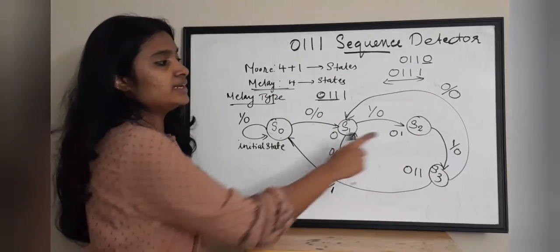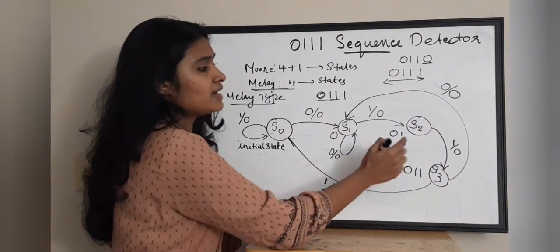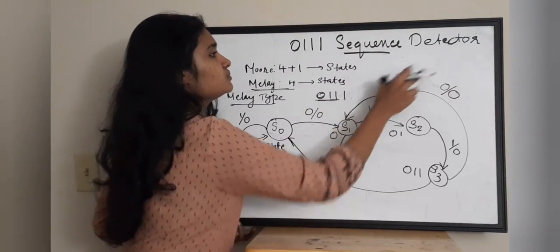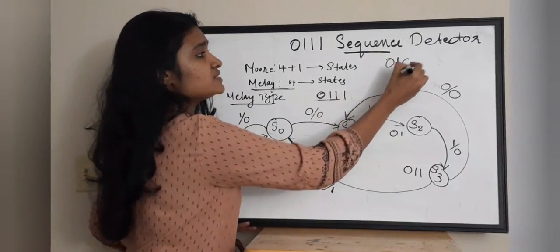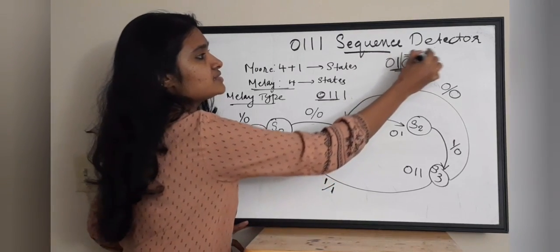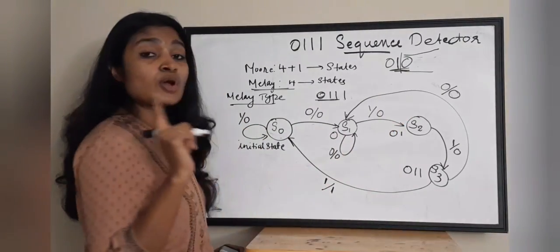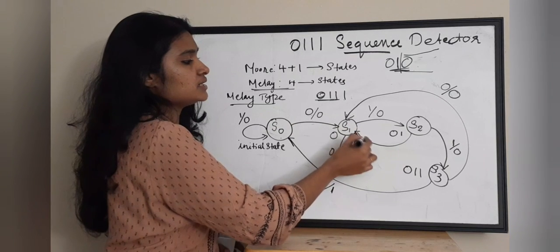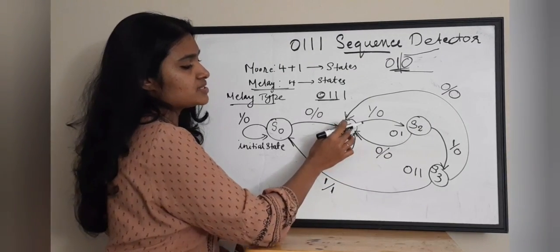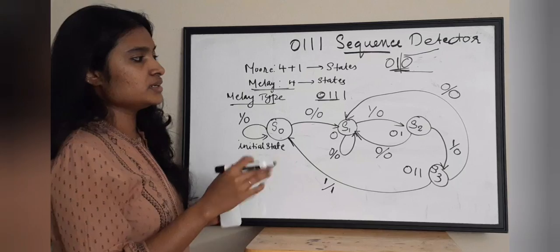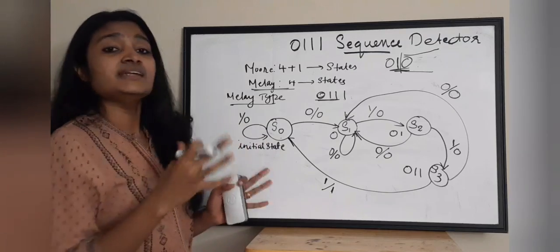In S2 we took receiving a 1 moving to S3. In S2 you have 0 1 in hand. If you receive a 0, the pattern 0 1 0 is not relevant — only 0 is relevant and we still need 1 1 1. So you jump back to S1 state with output 0. All states and cases are now completed. This is the state diagram for Mealy type sequence detector for 0 1 1 1.